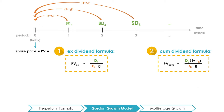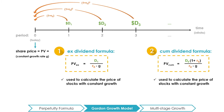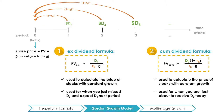Note that the ex- and cum-dividend formulas are two sides of the same coin, in that they both help us calculate the price of a stock with a constant dividend growth rate. However, choosing between applying the ex-dividend formula versus the cum-dividend formula depends on the scenario. The ex-dividend formula is used to calculate the price of a stock that just paid a dividend, and thus the numerator uses D1 to reflect next period's dividend. On the other hand, the cum-dividend formula is used to calculate the price of a stock that has yet to be paid, and thus the numerator uses D0 to reflect this period's dividend that we are anticipating to receive.